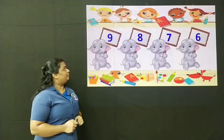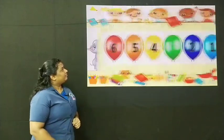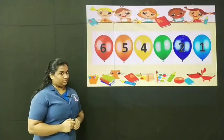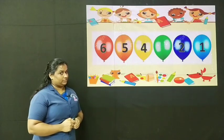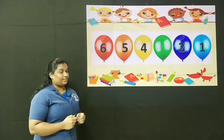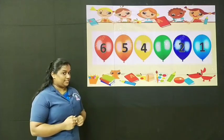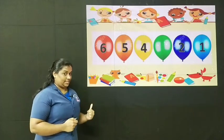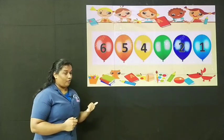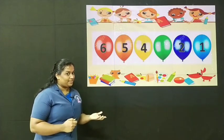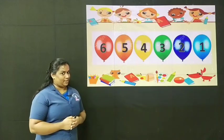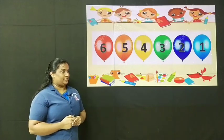One more question. Look at the numbers on the balloons. We have to count backward and find the missing number. 6, 5, 4 — what is the missing number? Yes, 3 is the missing number. Very good.